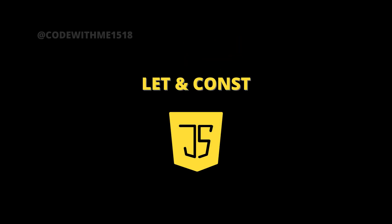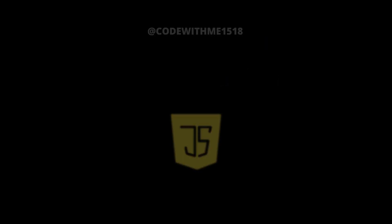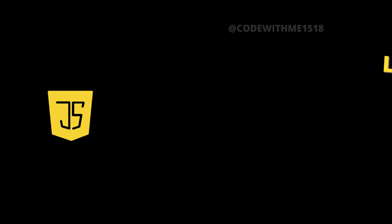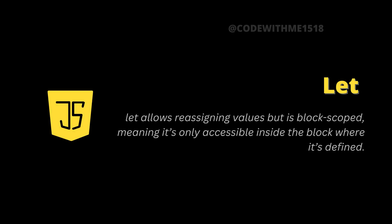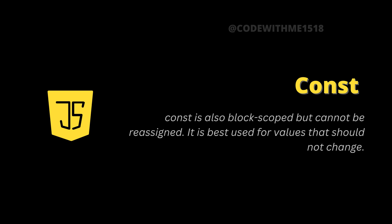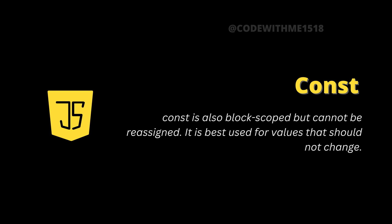Let and const. Before ES6, JavaScript used var to declare variables. However, let and const introduced better ways to handle variable declarations. Let allows reassigning values but is block-scoped, meaning it's only accessible inside the block where it's defined. Const is also block-scoped but cannot be reassigned — it's best used for values that should not change.